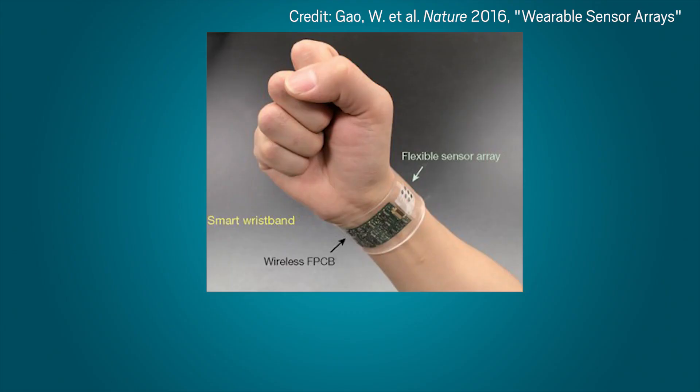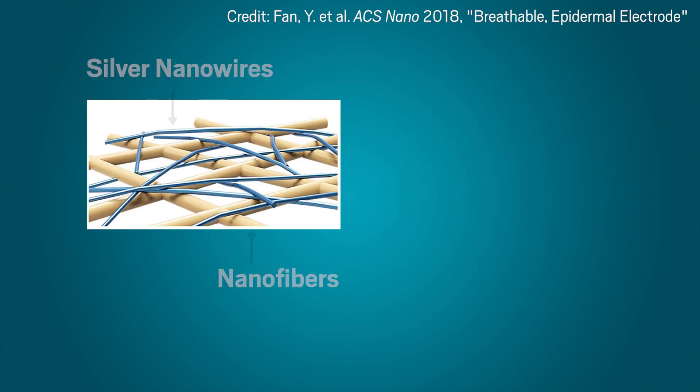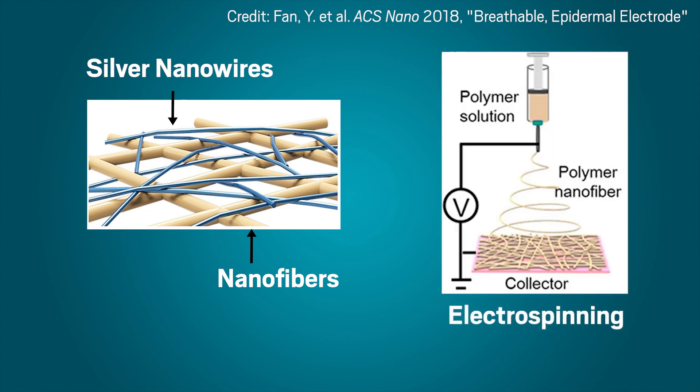Most existing wearable electrodes use solid polymer scaffolds, but these solid materials aren't completely breathable. They can trap sweat and irritate skin. To make more breathable sensors, researchers have developed more porous materials, but their fabrication requires complicated techniques like electrospinning.